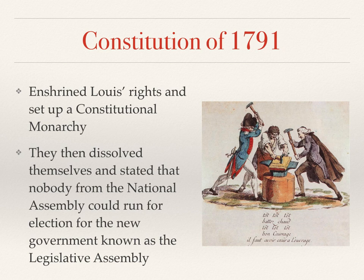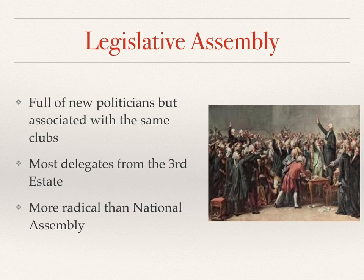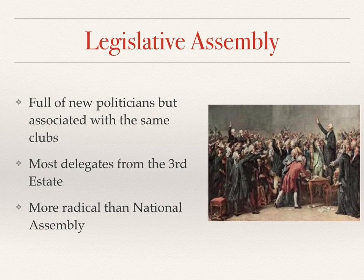Crucially, before they dissolved, a radical Jacobin politician called Maximilien Robespierre — who we'll be looking at in more detail later on — proposed that nobody who sat on the National Assembly should run for office in the new national government, which would be known as the Legislative Assembly. All the delegates agreed to this, and so the new Legislative Assembly consisted of new politicians. They still came from the same political groups, but were new men to the job, with most of them now being from the Third Estate, as the First and Second Estate were really isolated by the radical line the Legislative Assembly was taking.